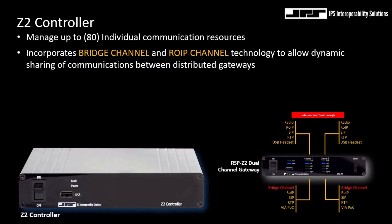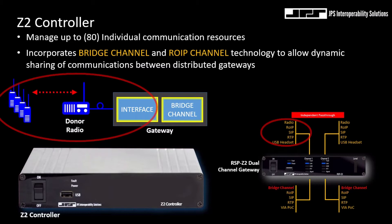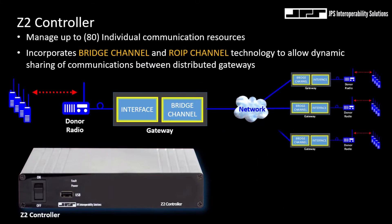The controller also manages the digital transport protocols called bridge channels and ROIP channels, which allows the transport and sharing of disparate communications over the network between those gateways. We also discussed the relationship between the communication interface and the bridge channel interface itself. The RSP Z2 gateway in this diagram is supporting a radio talk group, and those interfaces could be SIP, RTP, JPS ROIP, or even push-to-talk over cellular resources. The bridge channel is connected to a TCP/IP network — either the internet or a private network — and when in the presence of a Z2 controller, allows operators to manage and share different communication resources across the network, just like a switchboard operator.